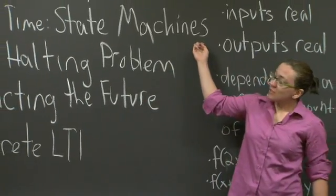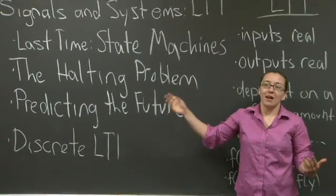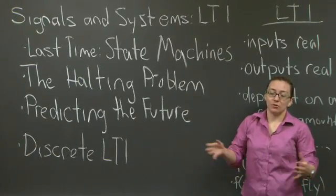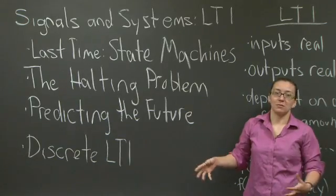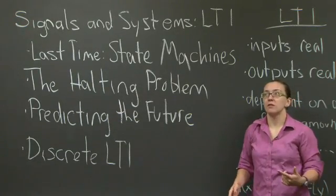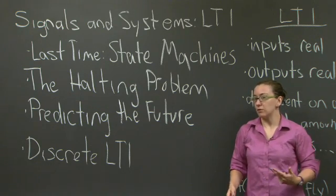Last time we talked about state machines. We're able to use them to model pretty much any system. We can model the evolution of a particular process over time using a record of all previous inputs and outputs and possibly previous states if we included that in our output.